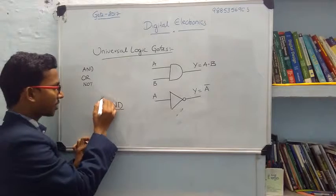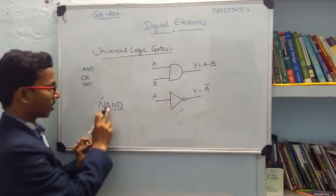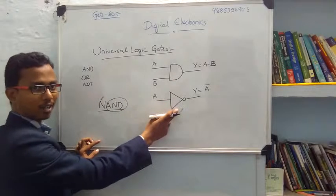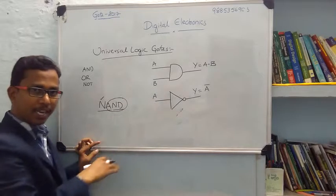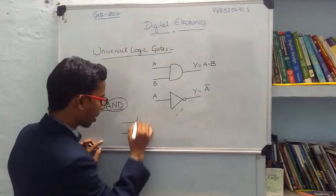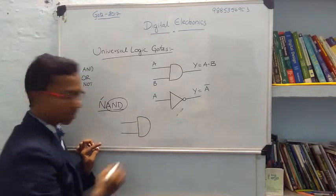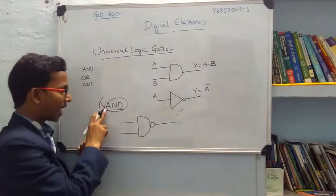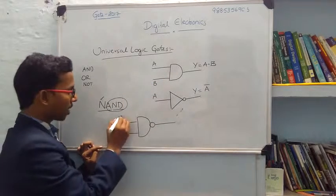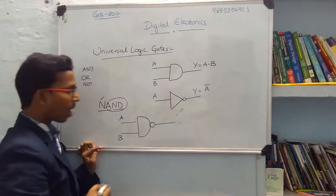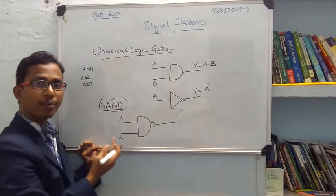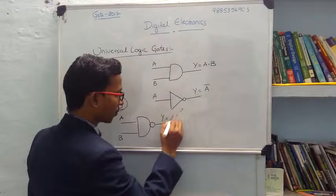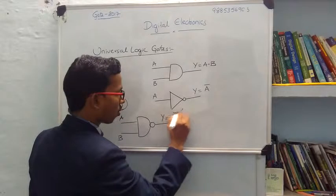Why is it called NAND? N stands for NOT — it performs the NOT operation. AND is for the AND operation. So we are using these two gates and implementing another gate. We can draw a symbol like this: first the AND operation takes place, then a bubble is added. We are establishing the NAND gate using an AND gate and a NOT gate. Inputs A and B are given. The output of the AND gate is Y equals A into B, but with the NOT operation indicated by the bubble, the output is Y equals A into B whole bar.